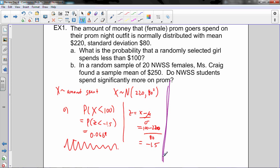In a random sample of 20 NWSS females, Ms. Craig found a sample mean of $250. Do Northwestern students spend significantly more on prom? Well, how do we test significance? That sounds like a hypothesis test, doesn't it? So part B here is a hypothesis test. With step 1, we state our null hypothesis and our alternate hypothesis. The null hypothesis is that nothing is different. Northwestern students actually spend $220, but the evidence suggests that it's more than that.